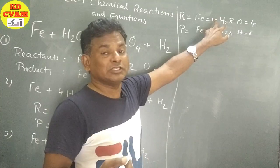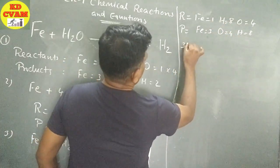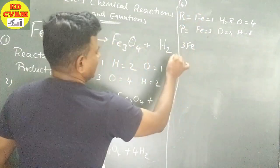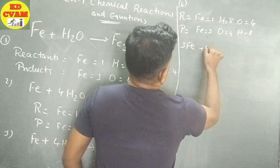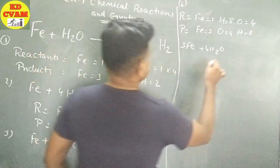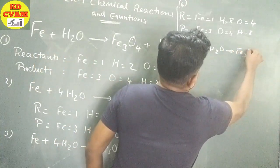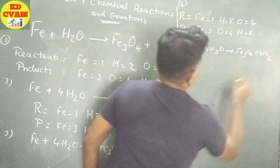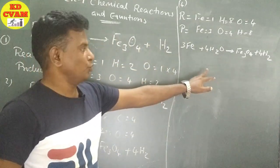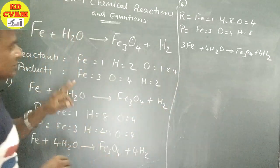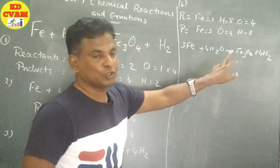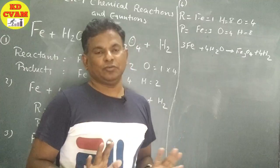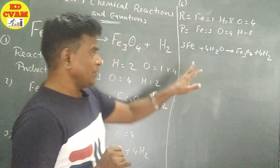So we get: 3Fe plus 4H2O gives Fe3O4 plus 4H2. 3Fe plus 4H2O gives Fe3O4 plus 4H2. This way we have got the balanced equation using the hit and trial method.